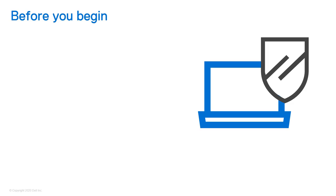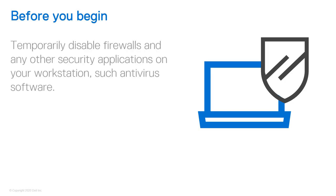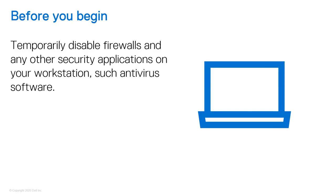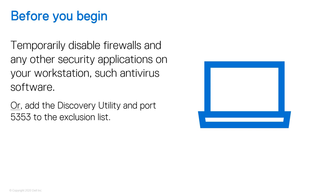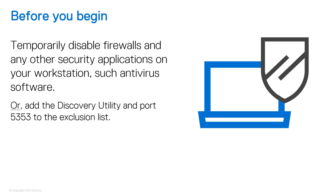There are a few things you need to do before running the Discovery Utility to ensure that you can find the unconfigured appliances on the network. First, temporarily disable the firewall on your workstation. You should also temporarily disable any other security applications on your workstation, such as antivirus software. If you can't disable your firewall and antivirus software, add port 5353 and the Discovery Utility to the exclusion list of any firewall and antivirus software running on the workstation. Refer to your antivirus and firewall documentation for more information.